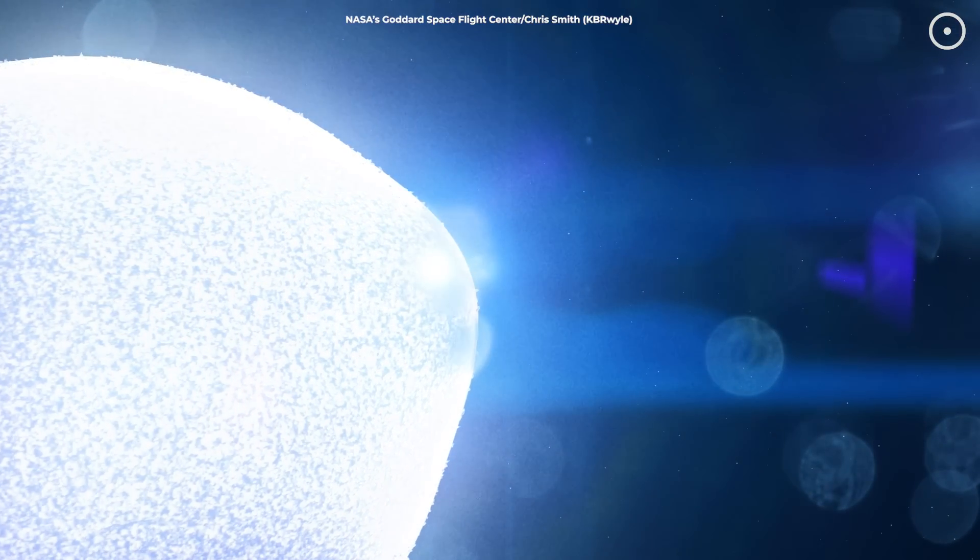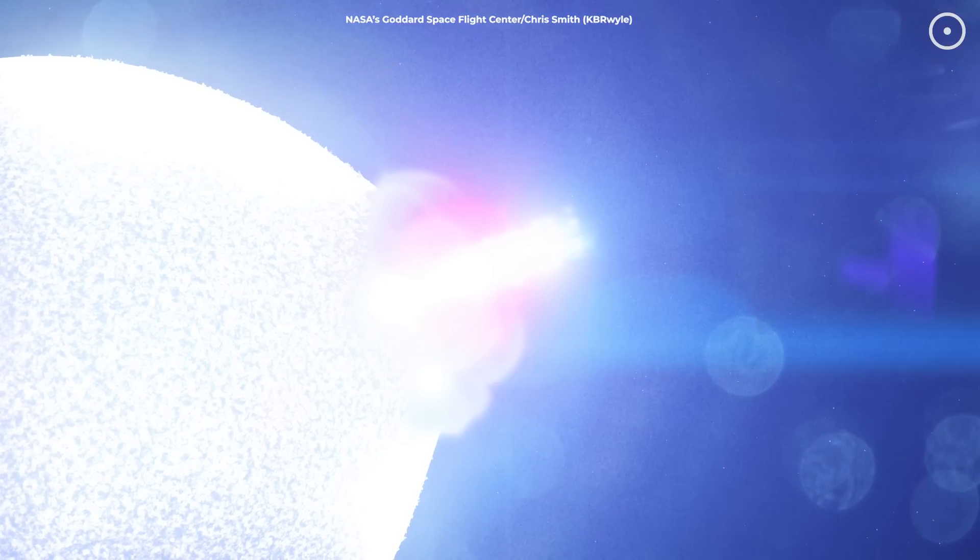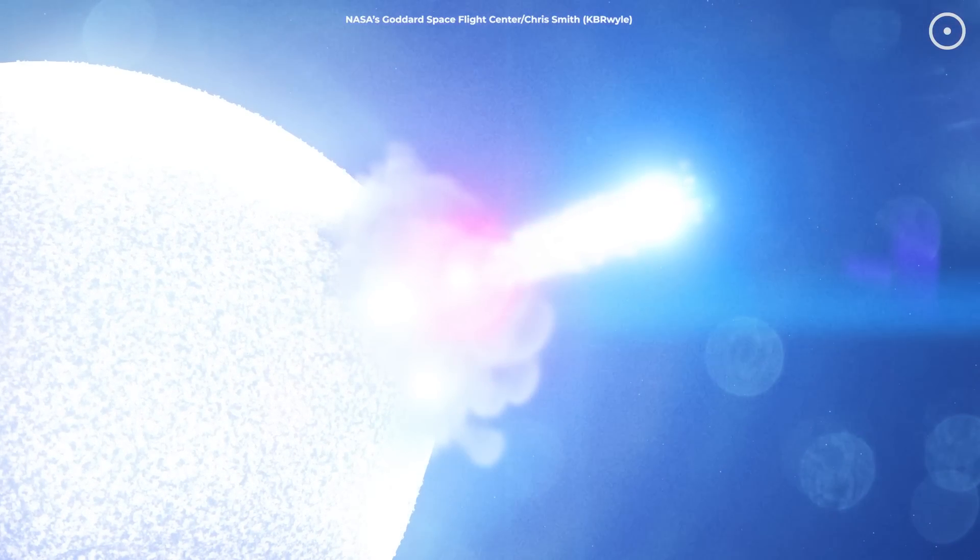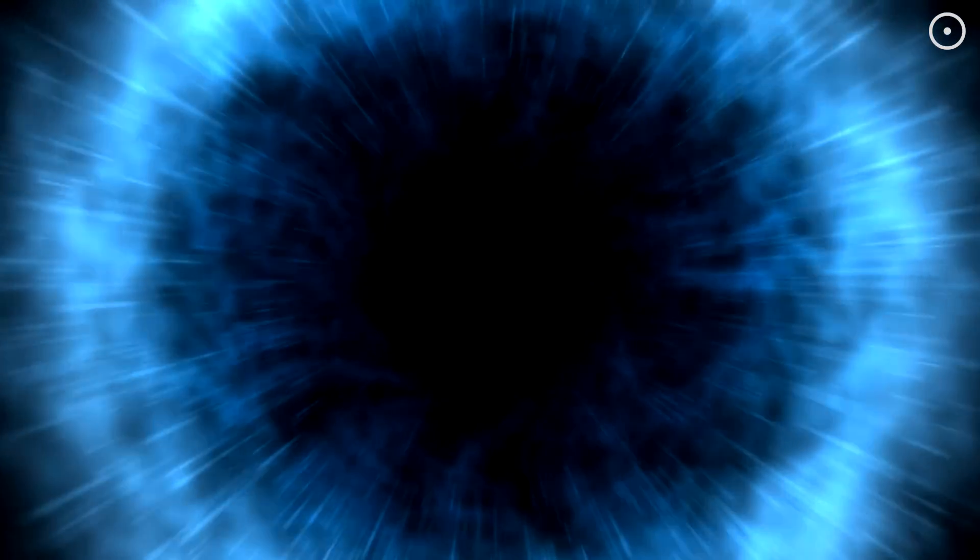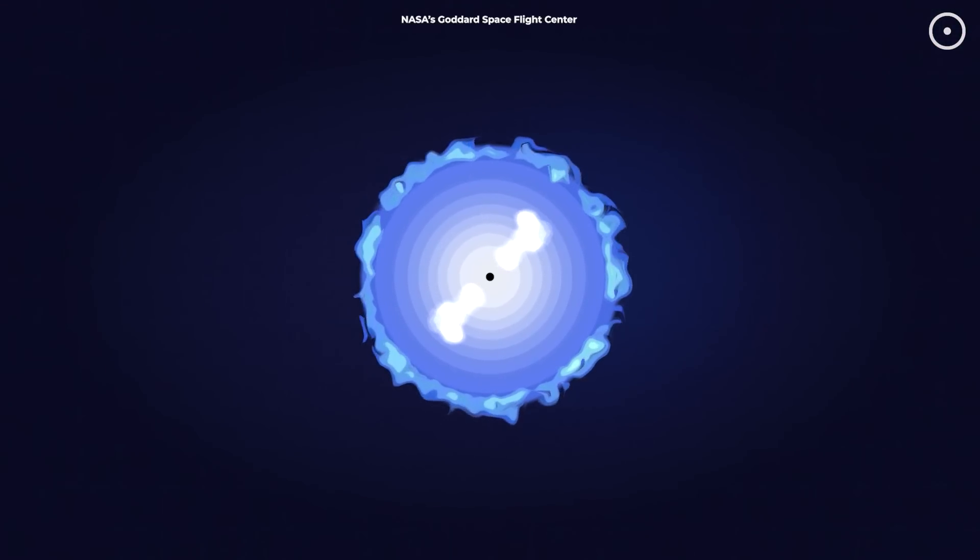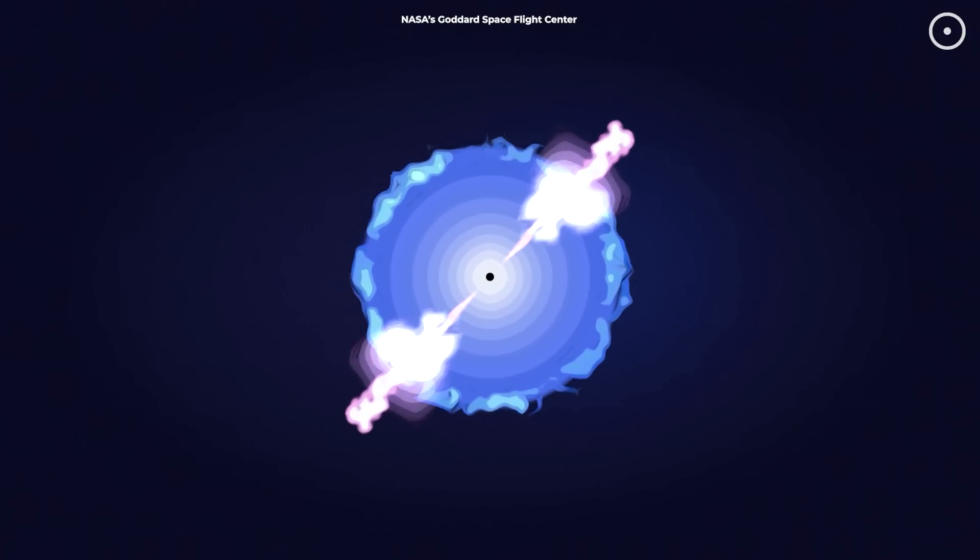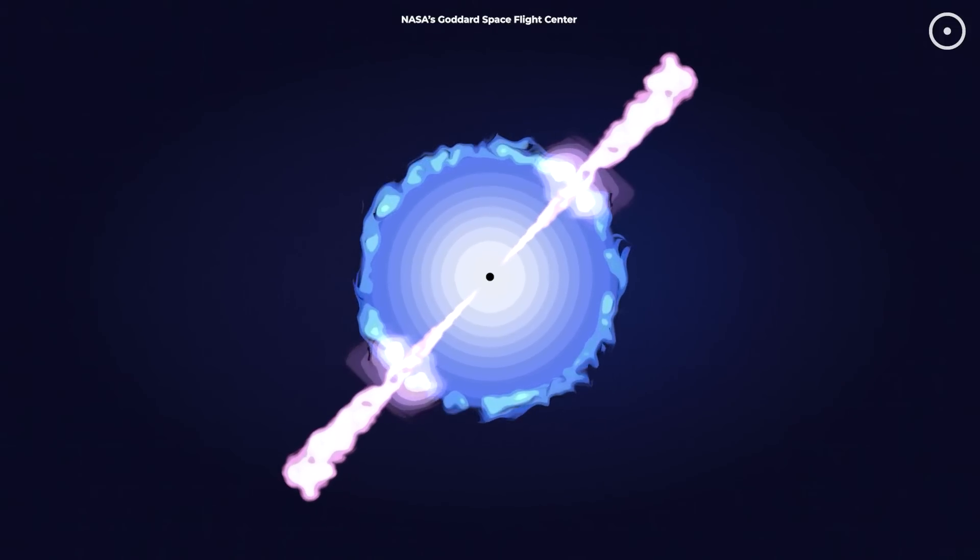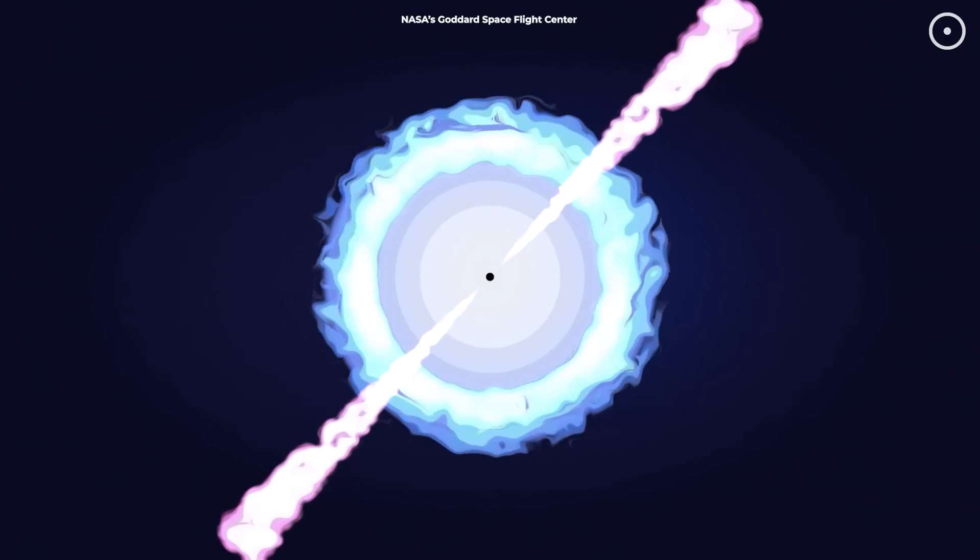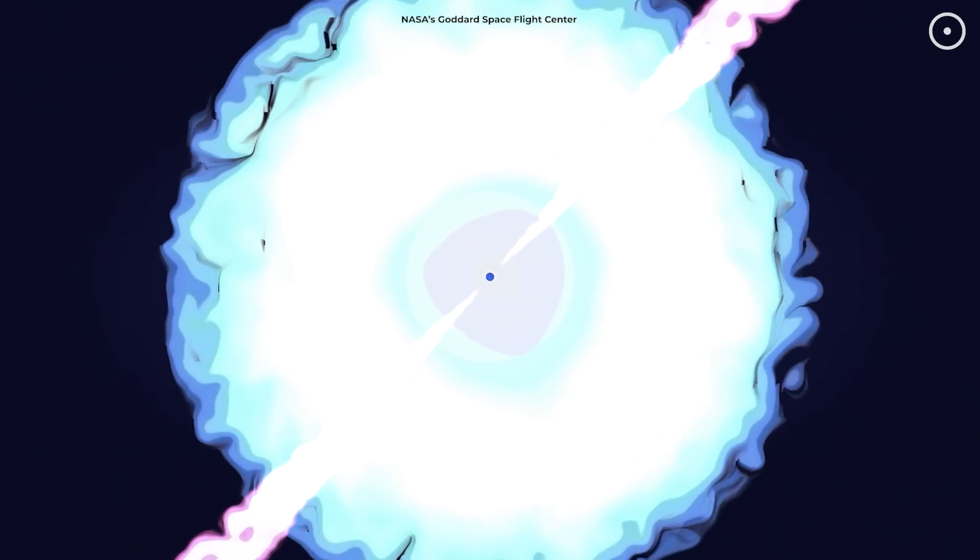The black hole at the center continues to feed on the star's material, generating immense amounts of energy. The intense gravitational pull of the black hole draws in the star's outer layers, creating a continuous cycle of material being consumed and energy being released. It's a balance of forces, gravity pulling in and energy pushing out. This energy prevents the outer layers from collapsing entirely, creating a stable but extremely luminous object, up to a billion times more luminous than the Sun.